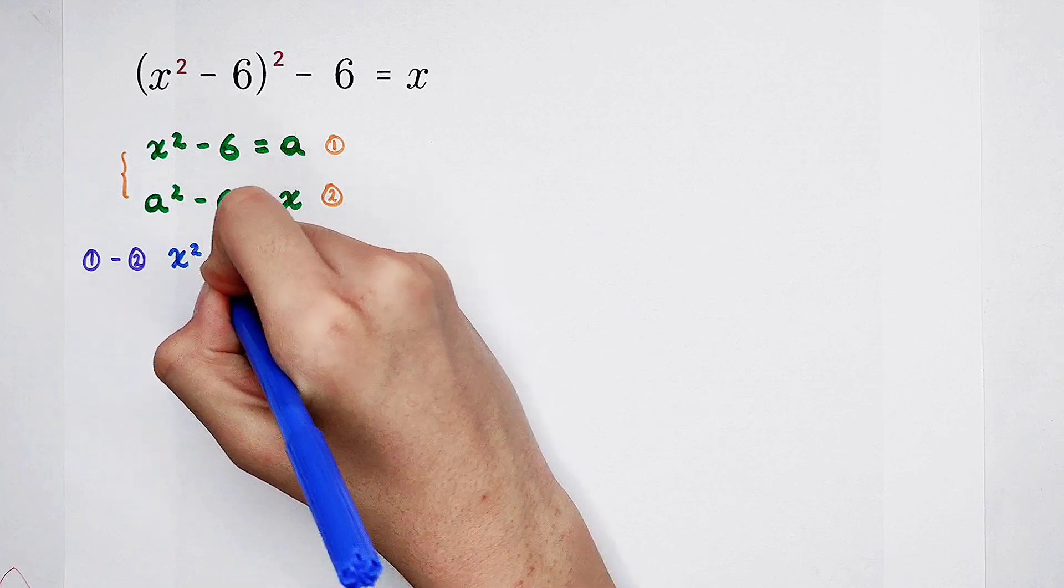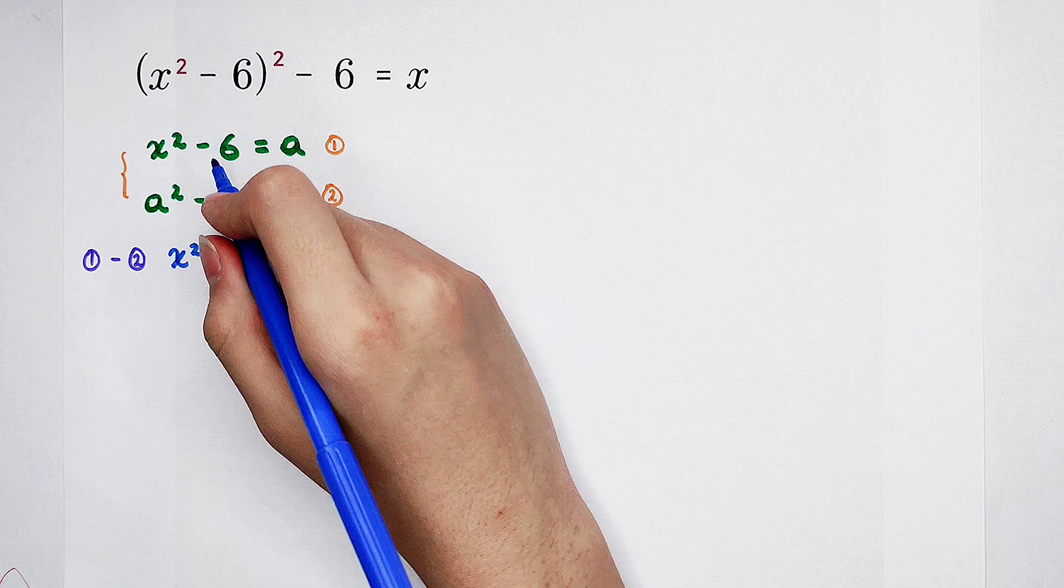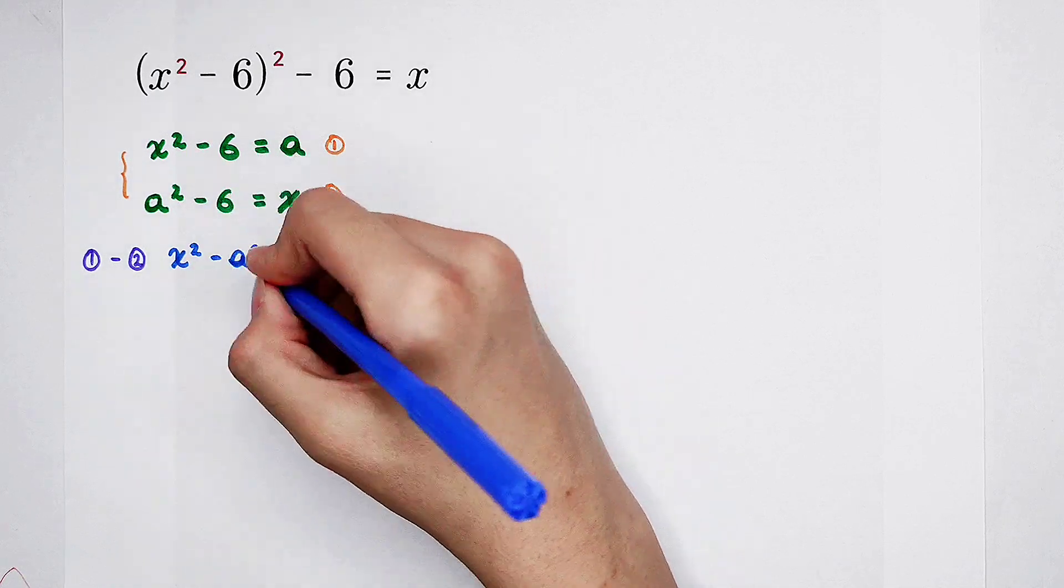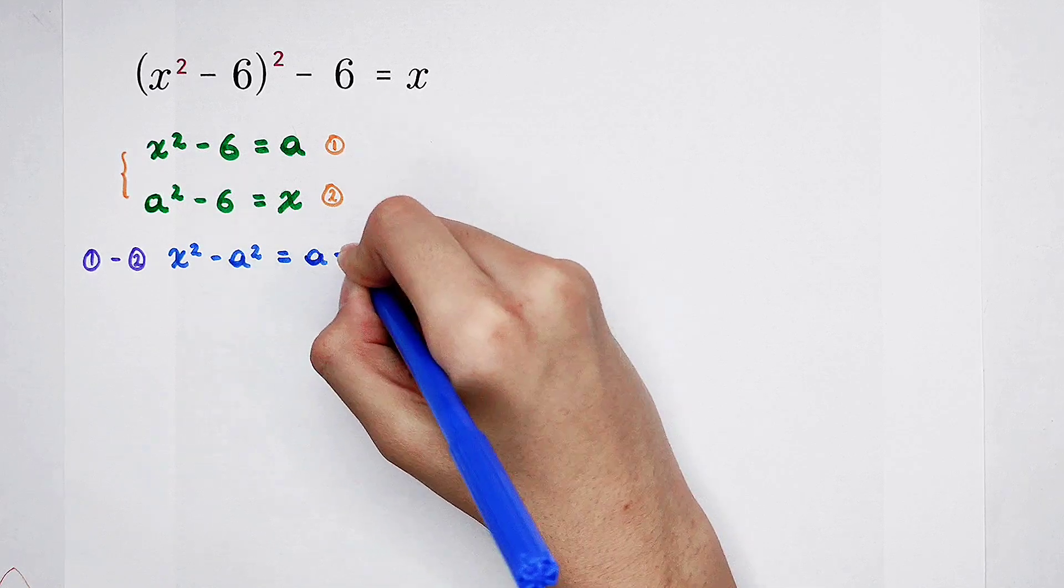So, x squared minus a squared. Negative 6, negative 6, they can be cancelled out. And here, the right-hand side, a minus x.